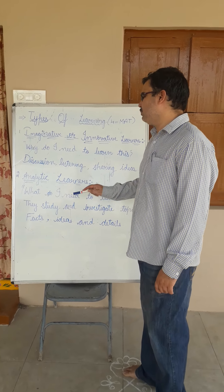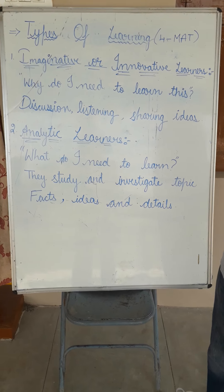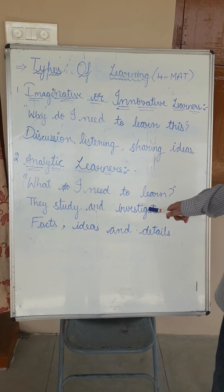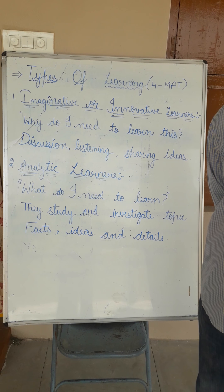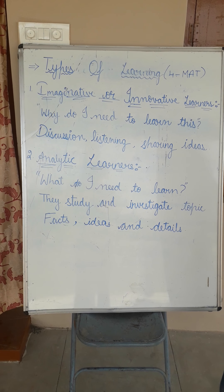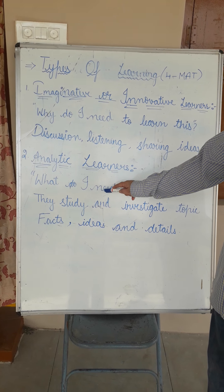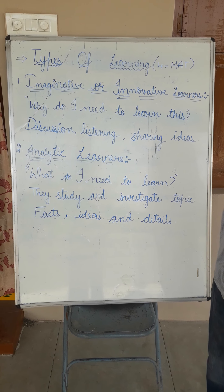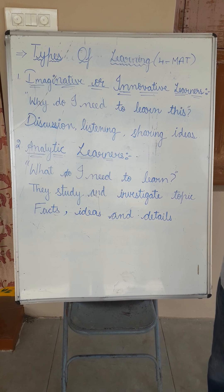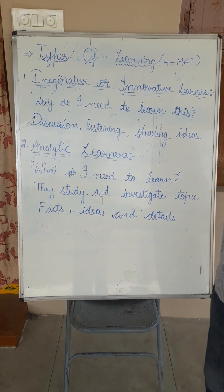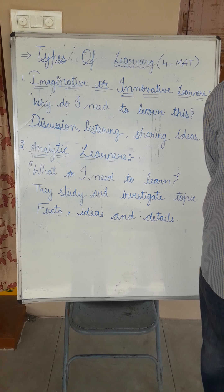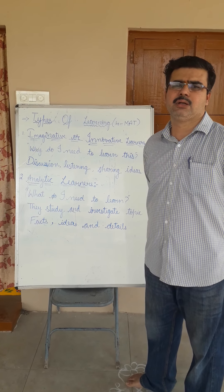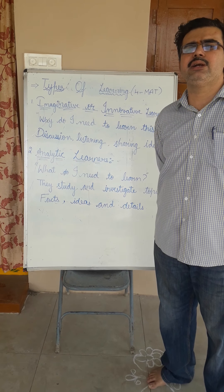The second type of learners are analytical learners. They are always experimenting. When you start any topic or lesson, the first question that raises in their mind is, 'What do I need to learn?' These learners read a lot of books and study in depth. If you omit even one line from the textbook, they will come back and ask about it. They study and investigate a topic, requiring facts, ideas, and in-depth concepts.